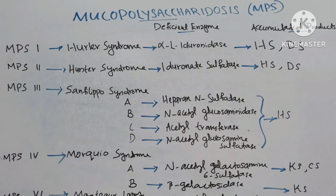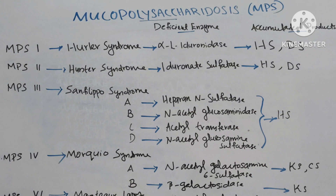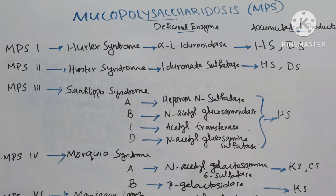MPS4, Morquio syndrome. Subtypes A and B. Type A is due to the deficiency of the enzyme N-acetylgalactosamine 6-sulfatase, with accumulative products of keratan sulfate and chondroitin sulfate. Type B enzyme is beta-galactosidase, and the product is keratan sulfate.